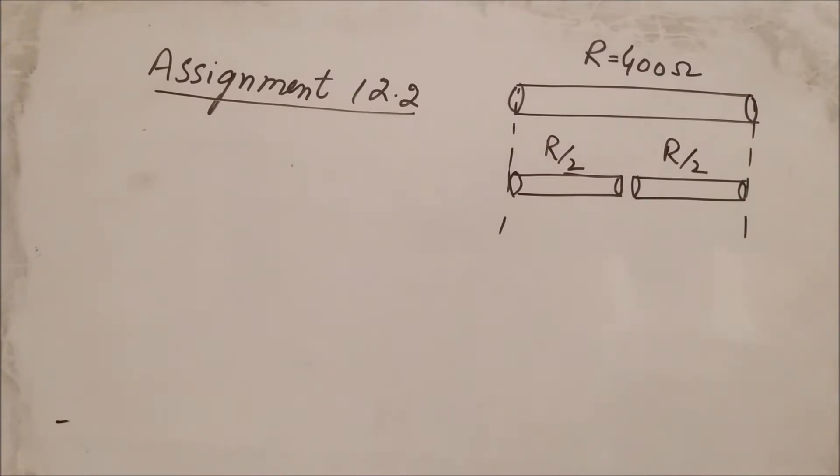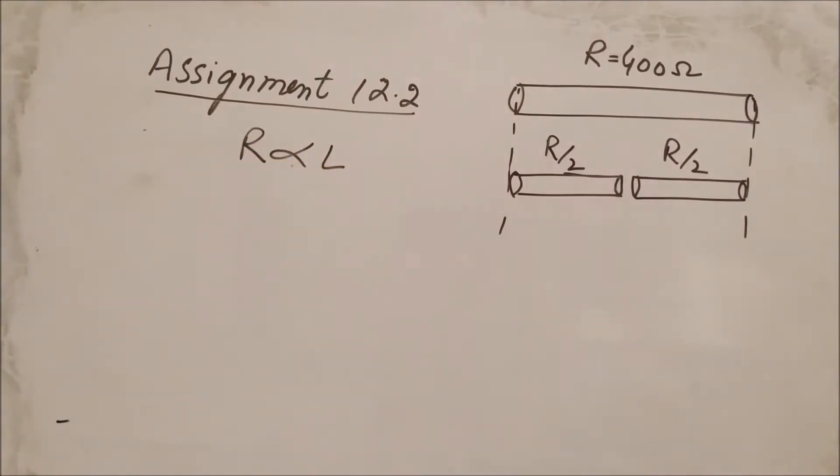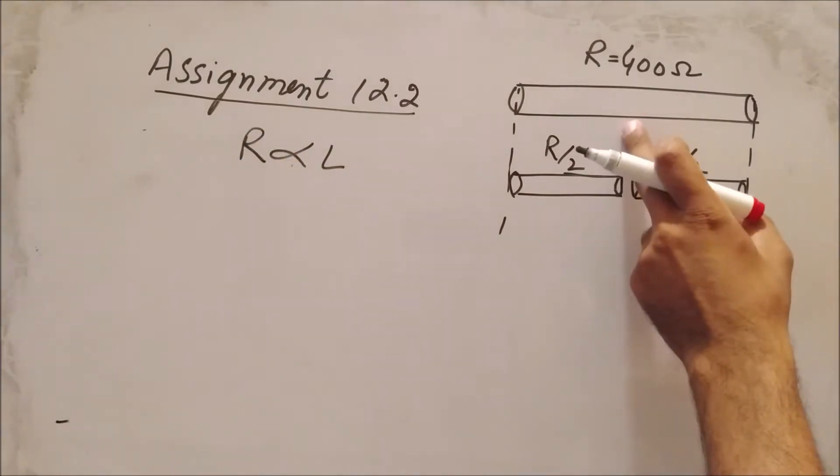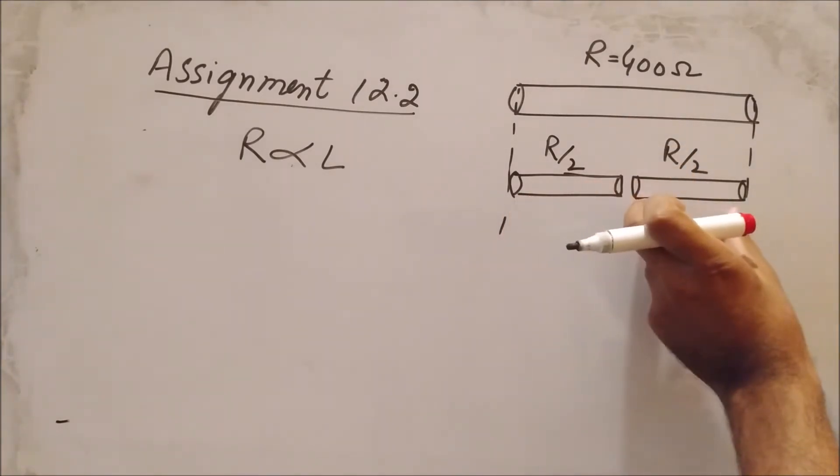We have a wire which is 400 ohms. We know that resistance is directly related to length, so if we have length cut to half, the resistance also needs to be half. Every piece will have resistance divided by 2.